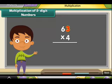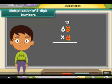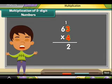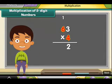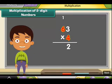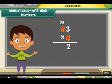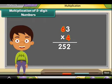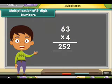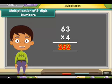Firstly, multiply 3 by 4: 4 into 3 is equal to 12. Place 2 under the line at the ones place. Then multiply 6 by 4 and add the carried 1: 4 into 6 plus 1 is equal to 25. Place 25 below the line. The answer is 252.